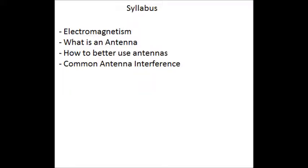RC aircrafts are radio controlled aircrafts governed by radio waves. This is a brief block of instruction on what electromagnetism is, what an antenna is, how to better use antennas, and common interference you may have. Understanding radio waves and how antennas work could possibly help you in this hobby.